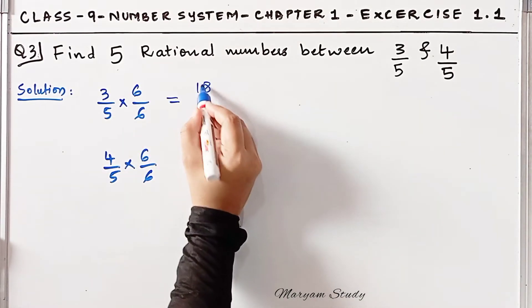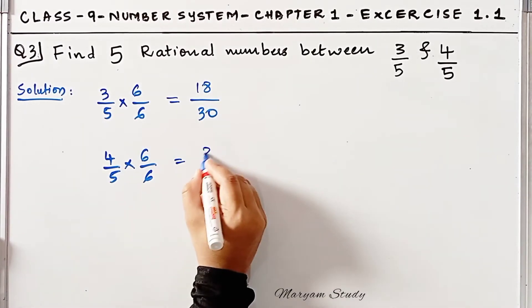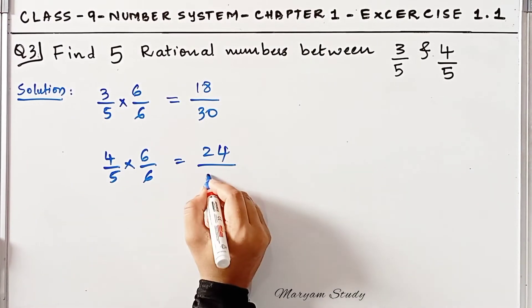So, 3 times 6 is 18, and 5 times 6 is 30. 4 times 6 is 24, and 5 times 6 is 30 again.